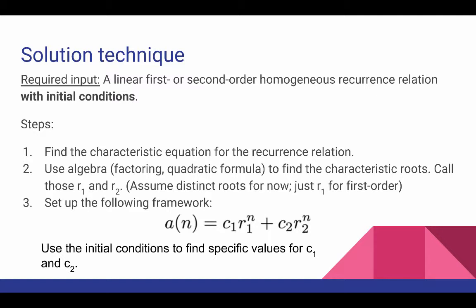Then we're going to use algebra, which could be partly factoring and partly the quadratic formula to find the characteristic roots for the recurrence relation. We're going to call those just for the time being r1 and r2. And as we mentioned in the last video, we're going to assume that those r1 and r2 are different, distinct roots.